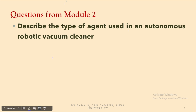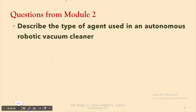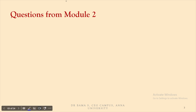The first question was: describe the type of agent used in an autonomous robotic vacuum cleaner. If you remember the last week's intelligent agents and the types of agents, there were five different agents, out of which the vacuum agent is model-based since the memory of sequences are registered in the model itself.